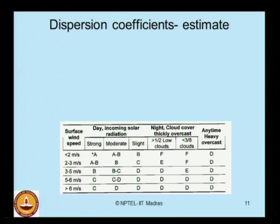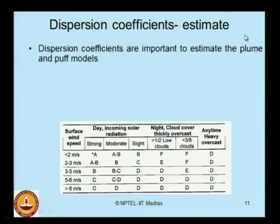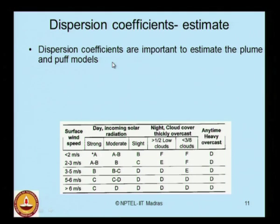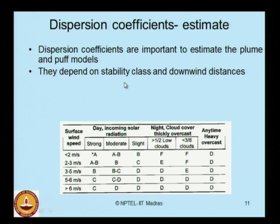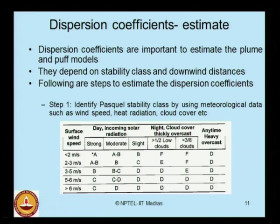In the plume and puff models, three categories of dispersion coefficients need to be estimated. Without the values of these dispersion coefficients, it is difficult to estimate the concentration of a continuous or instantaneous gaseous or vapor release. The dispersion coefficients depend on the stability class and the windward distance, which are the two variables that significantly influence their values. Step 1 is to identify the Pasquill stability class using meteorological data such as wind speed, heat radiation, and cloud cover.